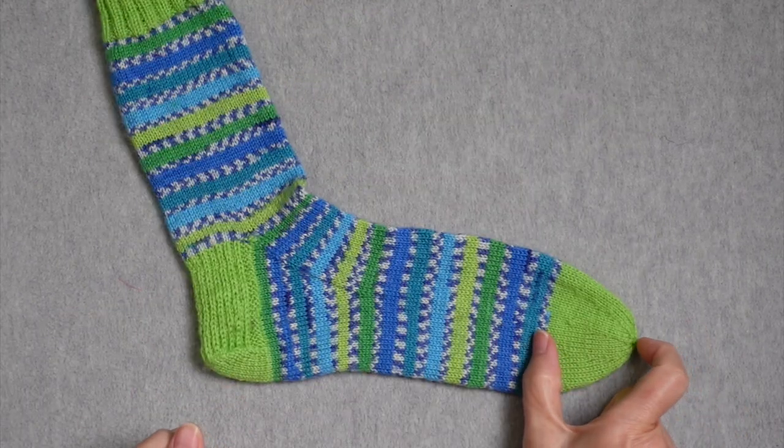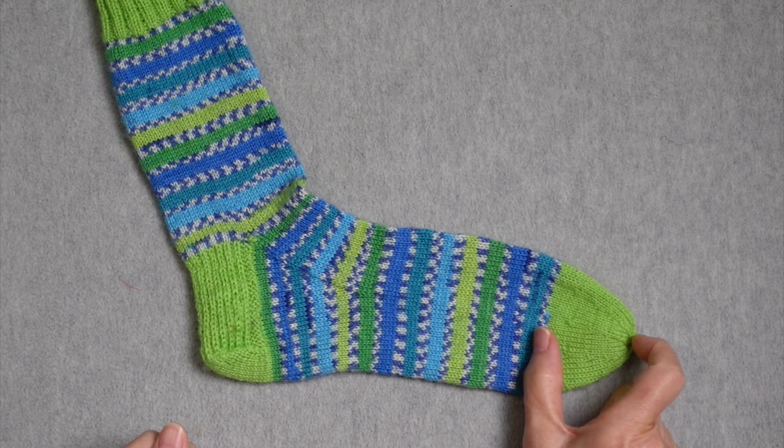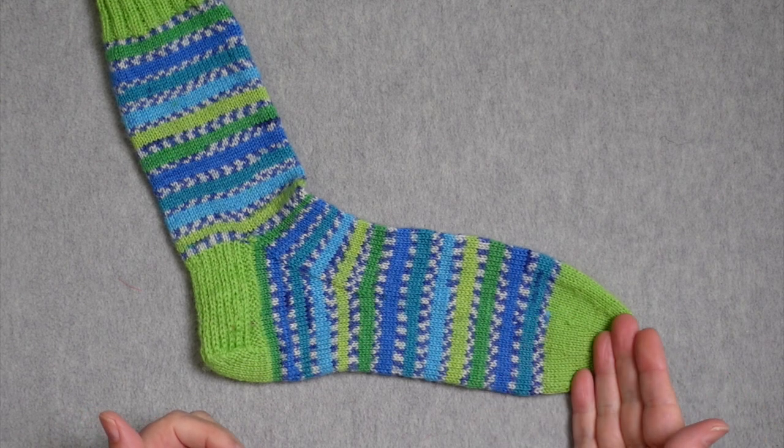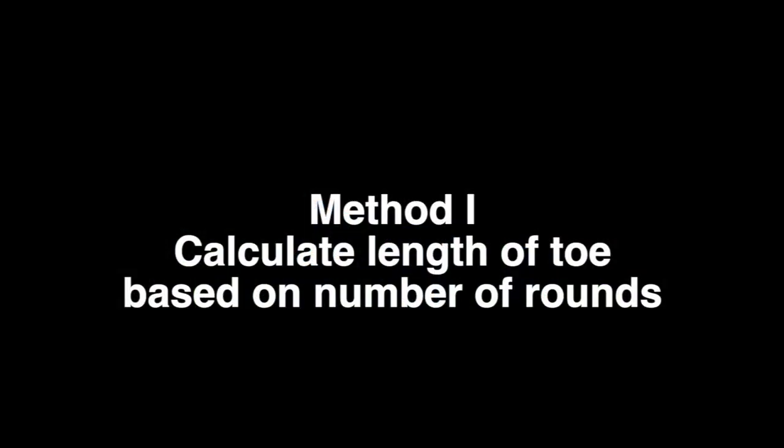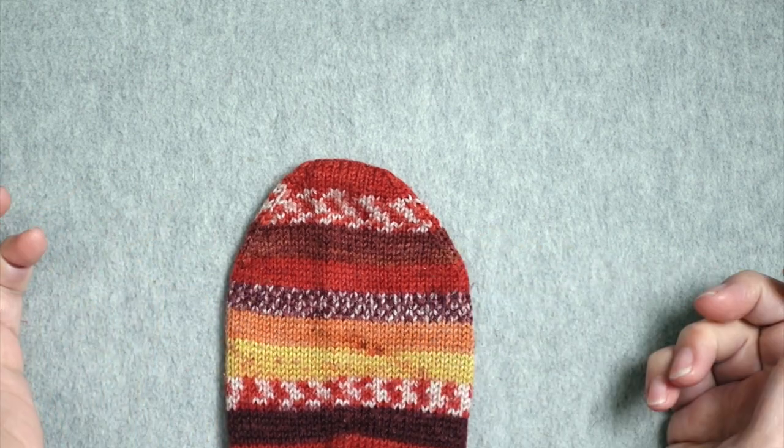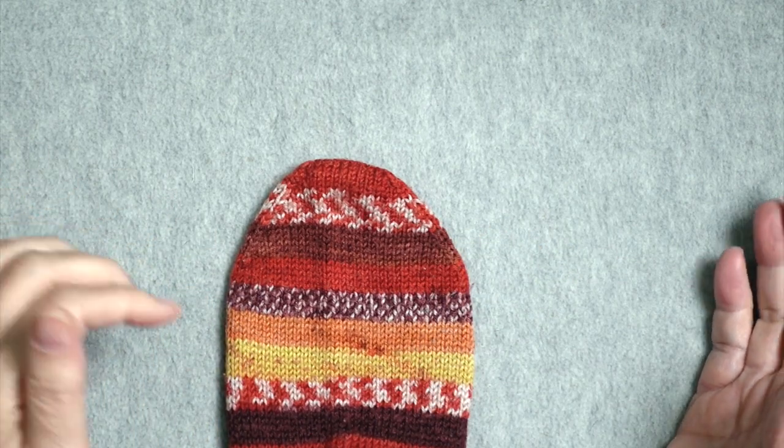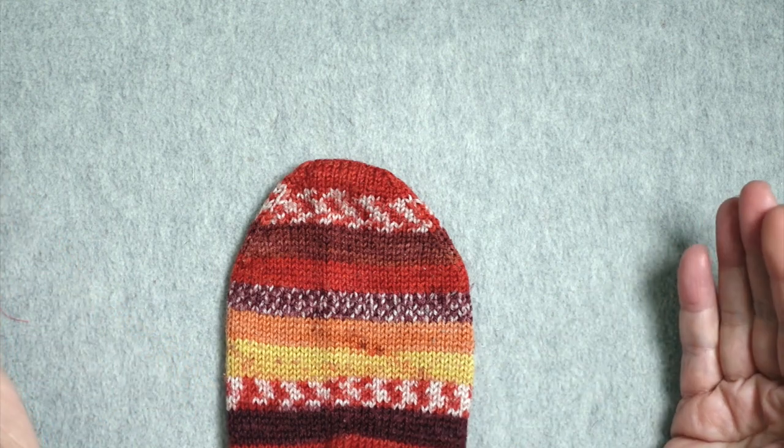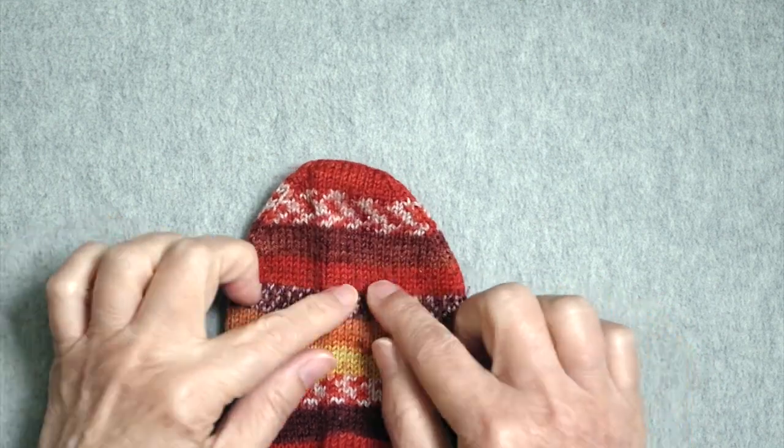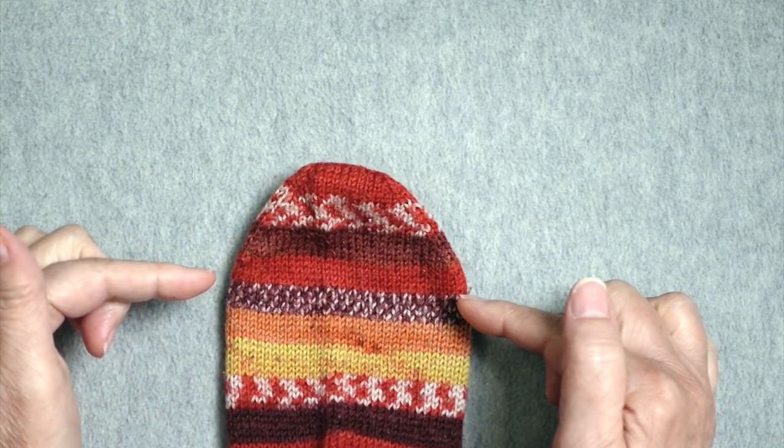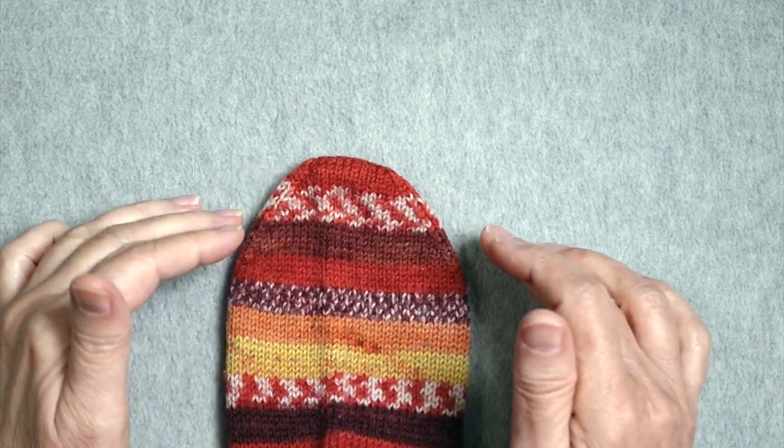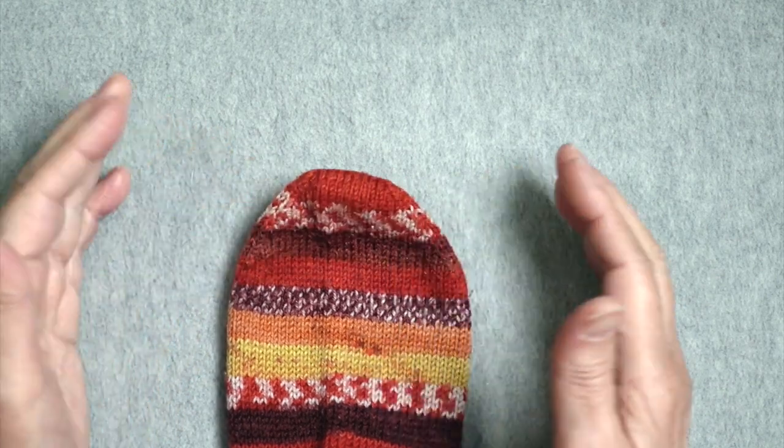The next thing I need to do is calculate how long that toe is going to be based on the instructions that I have for my sock toe. This sock has a toe that was knit with what's called the wedge toe. It's probably the most common sock toe that is used in socks today. There are four decreases in a decrease round. There's two at each side, and then you follow every decrease round with a plain round until you work the final decrease round with no plain round after that, and then you graft the toe shut.